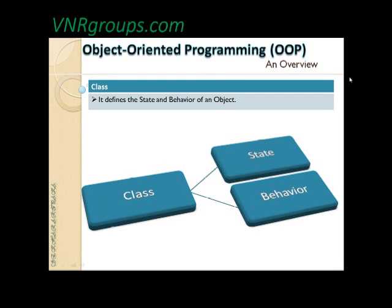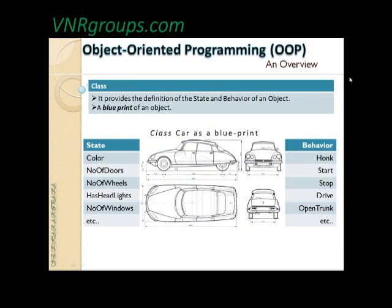The first one is a class. We have already seen the class and we will see a different dimension to it today. When we declare a class, in simple words, it defines the state and the behavior of the class. A class has two main aspects: state and behavior. These are the two characteristics that any object, if you see around, will possess. The state is normally defined and represents the properties. If you see a real-time object, the class provides the definition of the state and behavior of an object.